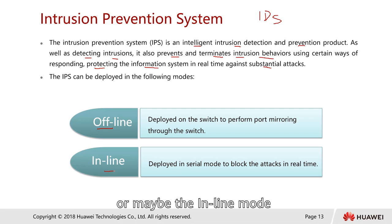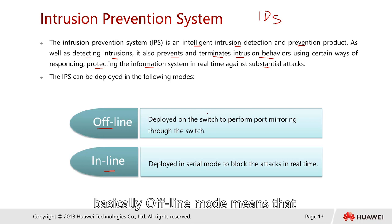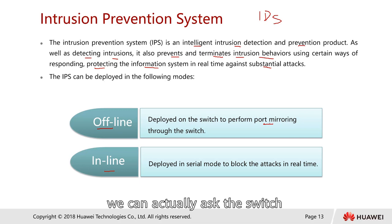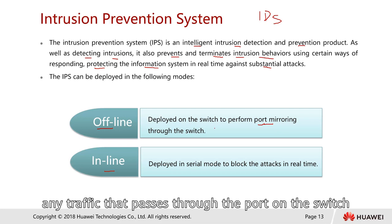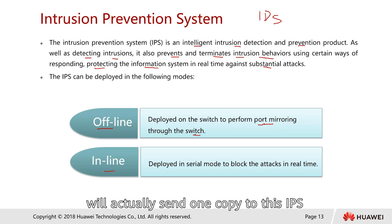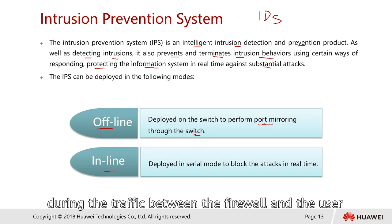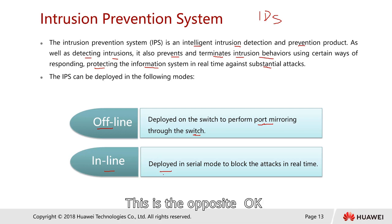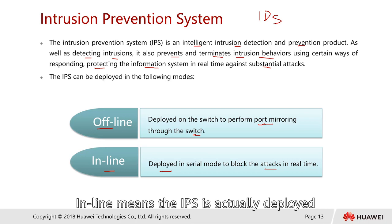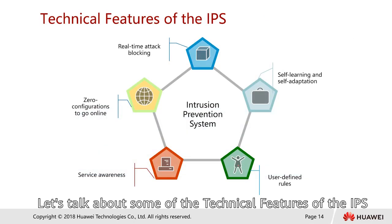IPS can be deployed in the following modes: offline mode or inline mode. Offline mode doesn't mean the IPS system is offline — it means we ask the switch to perform port mirroring, so any traffic that passes through a port on the switch sends one copy to the IPS. The IPS is not sitting in the middle of the traffic path between the firewall and the user. Inline mode means the IPS is deployed directly between the traffic flows and performs real-time scanning.